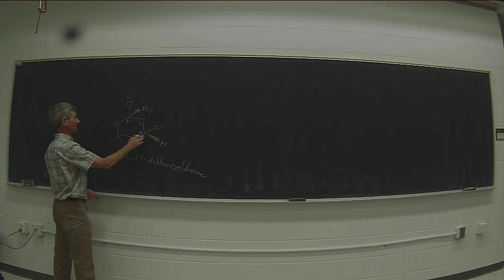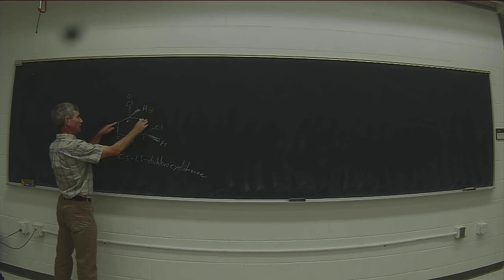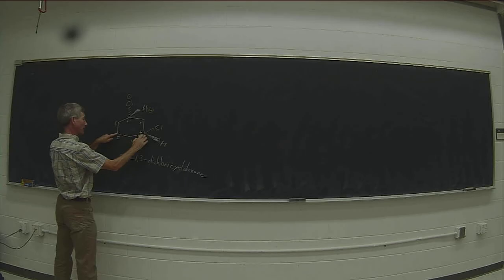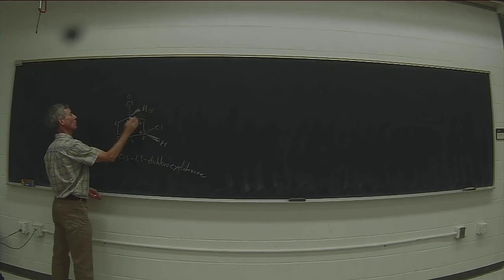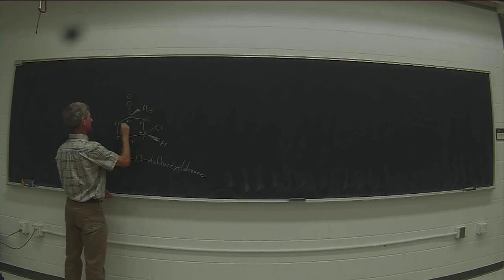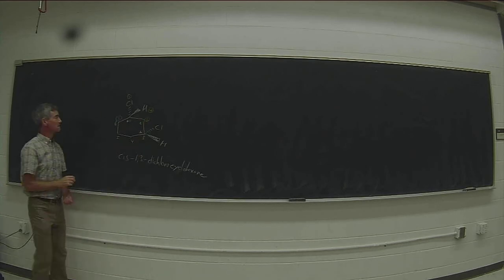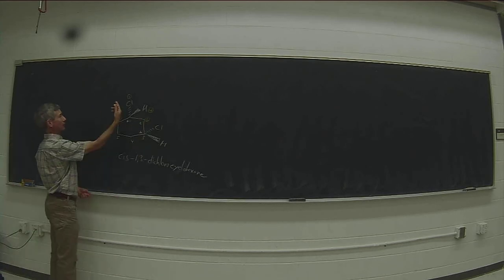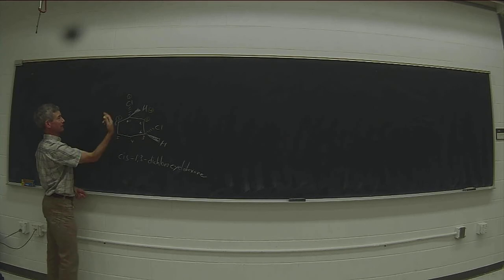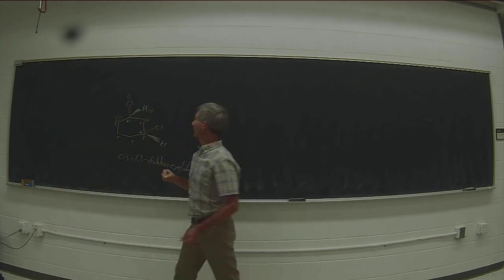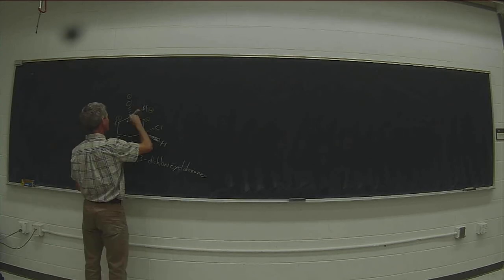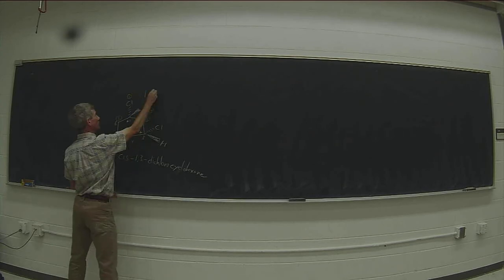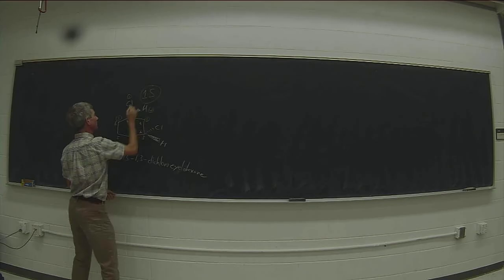We keep going: carbon 3 is attached to chlorine while carbon 5 is not, so carbon 2 outranks carbon 6 at carbon 1's center. We're looking the wrong way down the bond again — we have to put ourselves behind the plane of the board. When we turn around, what appeared clockwise is actually counterclockwise. So the stereocenter at carbon 1 is S.